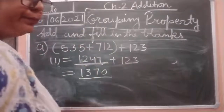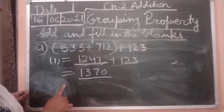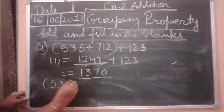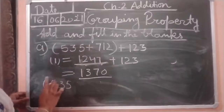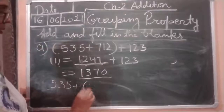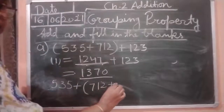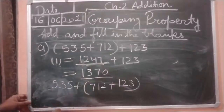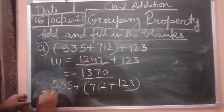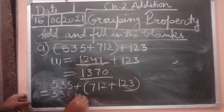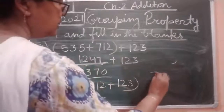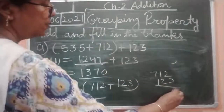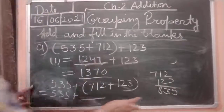Now we will do the same sum in a different manner. So 535, and now we make a new group: 712 plus 123. First we add 712 plus 123: two plus three is five; one plus two is three; seven plus one is eight. So 712 plus 123 equals 835.